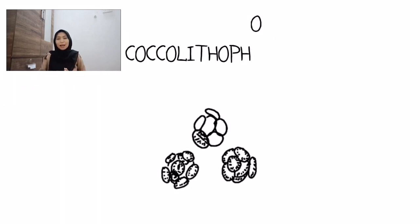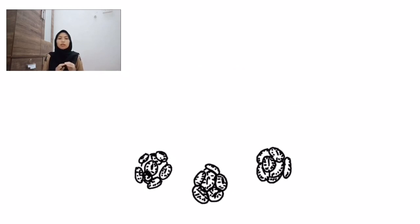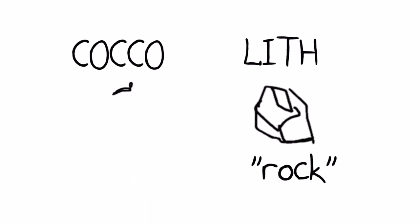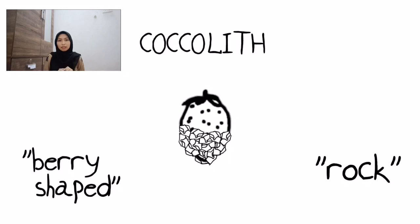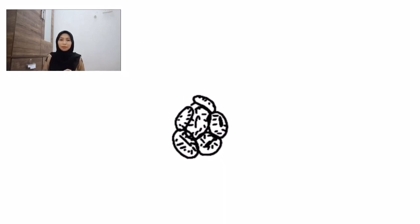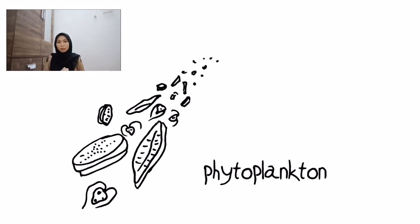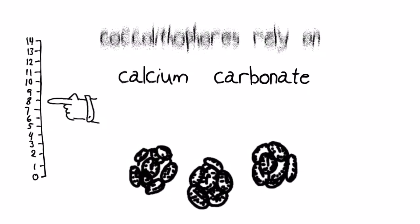Now, coccolithophores. Coccolithophores are very interesting, somewhat mysterious single-cell algae that also take up calcium carbonate from the ocean to make a coccolith. 'Lith' means rock and 'cocco' roughly means berry-shaped. So these organisms are shaped like tiny fruits but with rocky coverings. Not everyone knows about this, but now you do. Because they are plants, they are really important as phytoplankton producers in the ocean ecosystem. The fact that they are making calcium carbonate shells means they are also deeply affected by decreasing ocean pH.